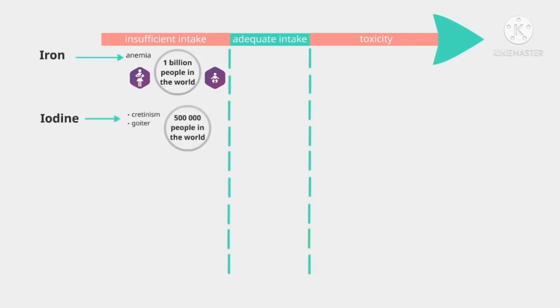Iodine deficiency, leading to cretinism and goiter, is frequent in Asia, South America, and Africa, and affects 500,000 people. Finally, the prevalence of marginal deficiency in zinc can reach 25% in Africa and Asia, and also leads to stunting and to a higher risk of infectious disease.